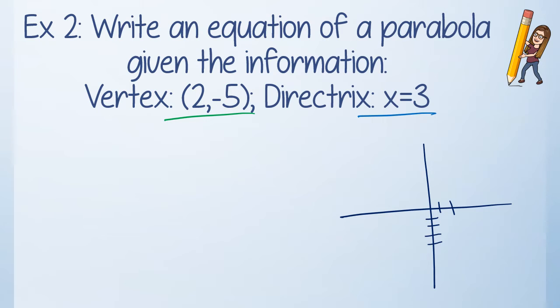If I'm at 2, negative 5, that's my vertex. And I have a directrix at x equals 3. That's a vertical line through the x axis at 3. So that means if that is my directrix, then my parabola is going to look something like this. And I can see that my distance here from my vertex to my directrix is a unit of 1. So that's the distance between there. So we're going to use this information. So the first thing I'm going to decide is this is a sideways parabola. That's going to be a y squared parabola.